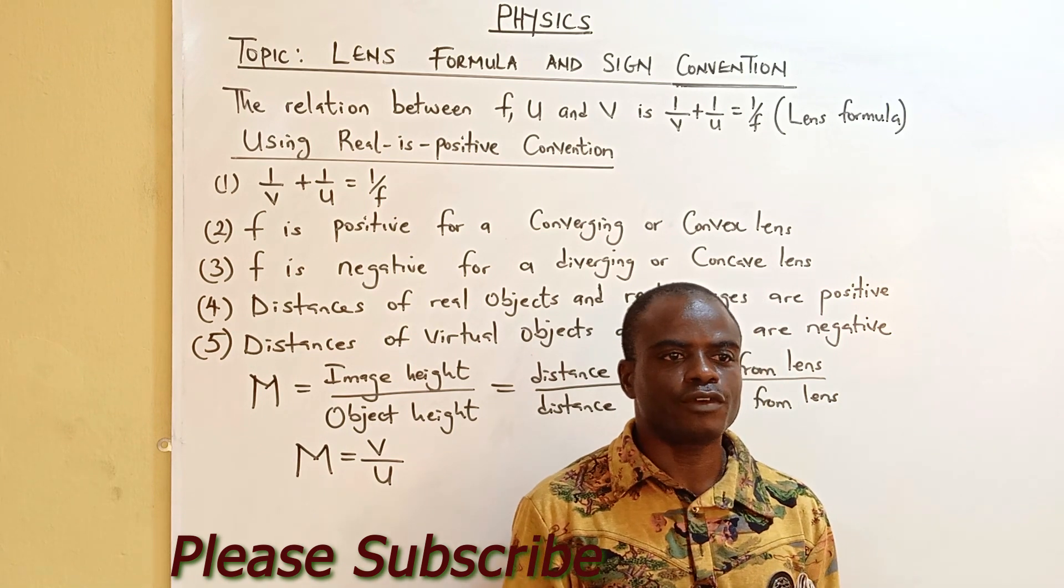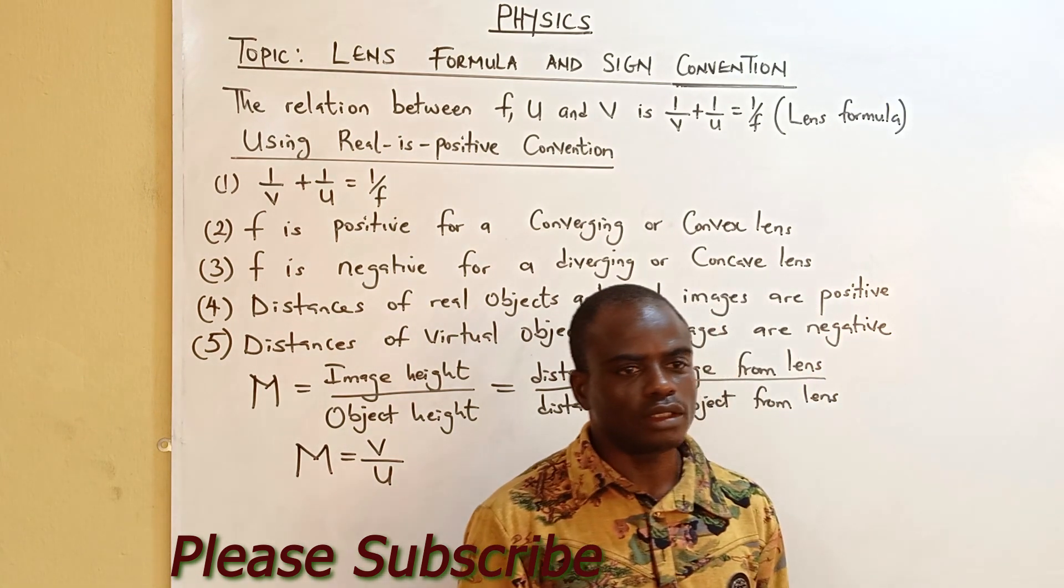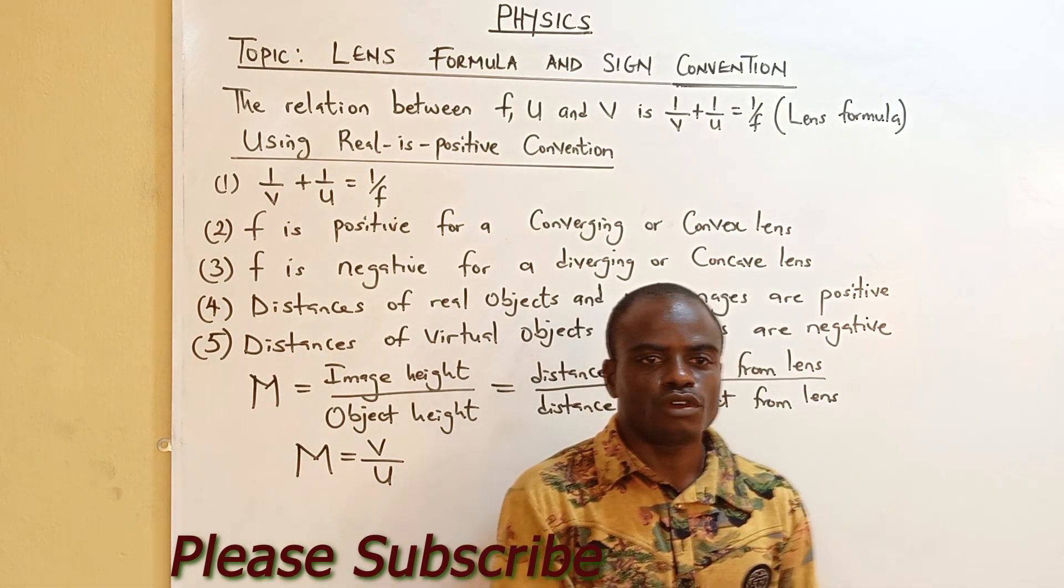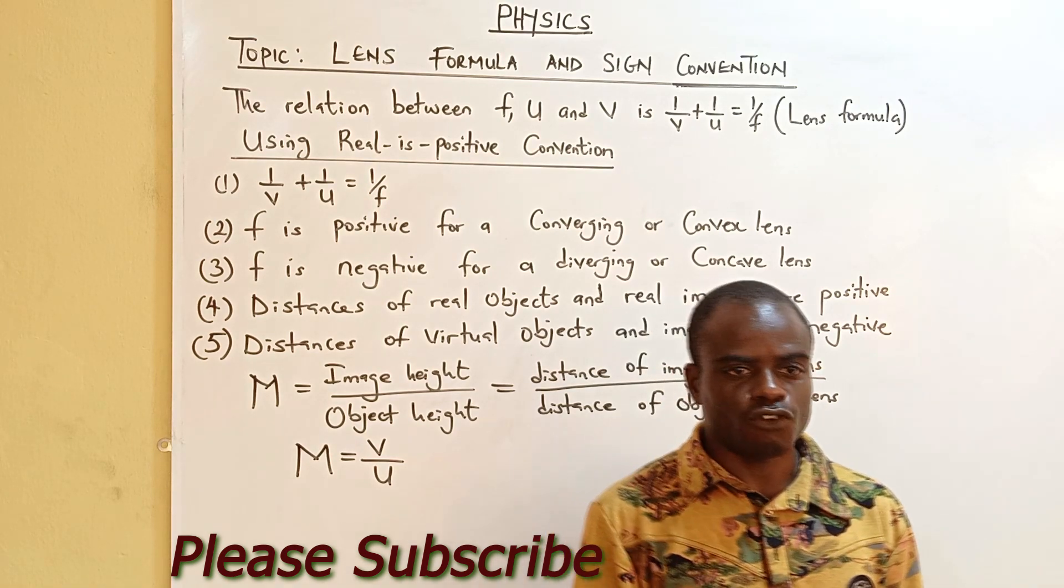is 1 over f equals 1 over v plus 1 over u. And we are going to be making use of real-is-positive convention to solve the problem under lens formula.